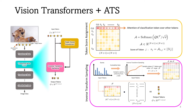Having these significance scores, we can now sample the input tokens using inverse transform sampling. Having the indices of the tokens to be sampled, we can prune the attention matrix A to get a new attention matrix called AS. Then by multiplying the attention matrix AS with the values V, we can get our pruned outputs O.